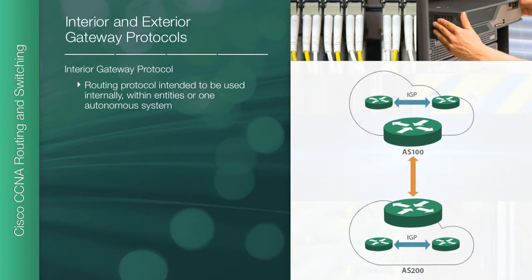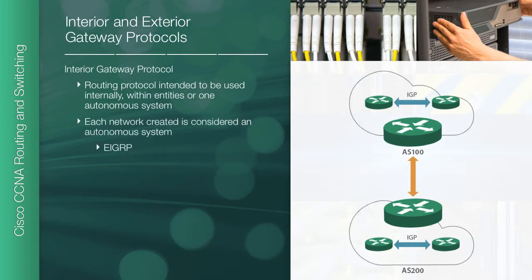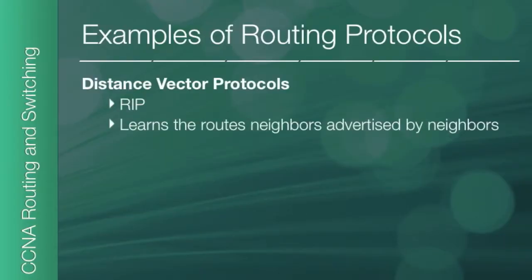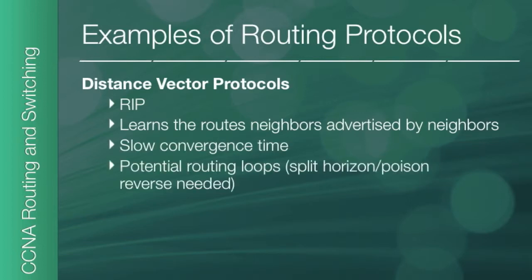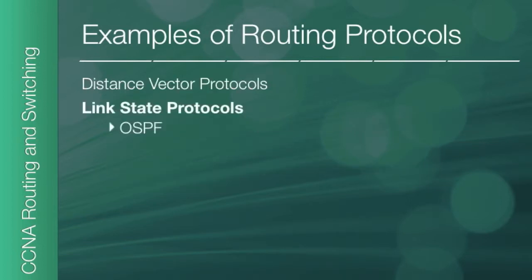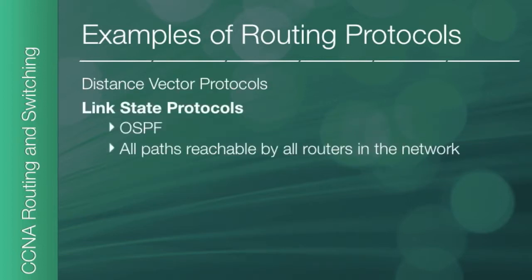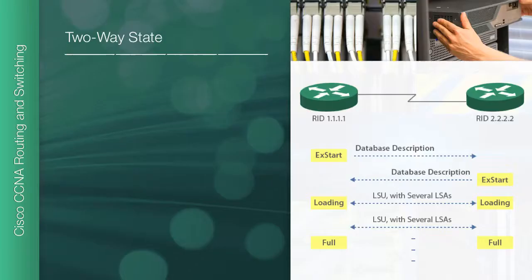In chapter three, we'll discuss routing and routing protocols and the difference between static and dynamic routing. We'll introduce the concept of link state versus distance vector routing protocols and discuss some of the differences between the routing protocols, like administrative distance, metrics, and next hop.